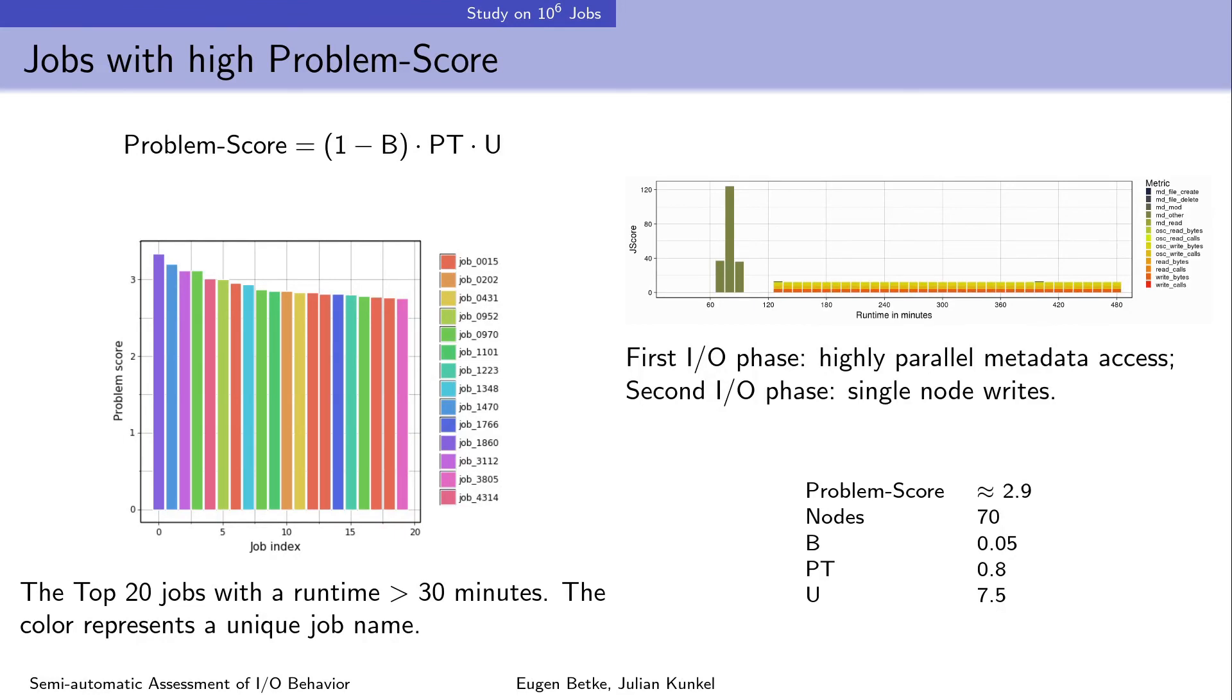On this slide, we conduct a similar analysis to find problematic jobs. The idea of this problem score penalty function is that it helps to find jobs that are doing unbalanced but intensive I/O. To do that, we subtract the job I/O balance metric from 1 and multiply it by other job metrics. Many of the applications with a high problem score would have a long I/O phase, and the parallelization of I/O could possibly shorten the job runtime. By ranking the problem score, we can find the corresponding jobs. The top 20 jobs with runtime longer than 30 minutes are visualized in the left picture. One of them is visualized in the picture on the right side. Here again, we have a typical short phase at the beginning followed by a long write phase by one of 70 nodes. Theoretically, with parallel I/O, the job runtime could be significantly shortened.